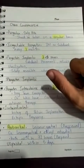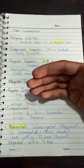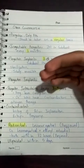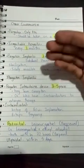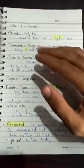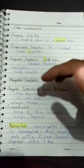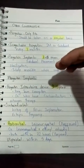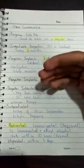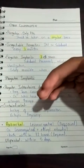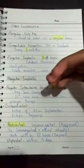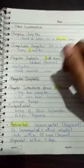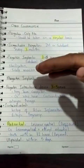Progestin-only pills are commonly used in lactating mothers because estrogen is an inhibitor of prolactin and mammary gland growth, meaning it would inhibit lactation. Therefore, estrogen should not be given to a lactating mother, and progestin-only pills are prescribed during the lactating interval instead.